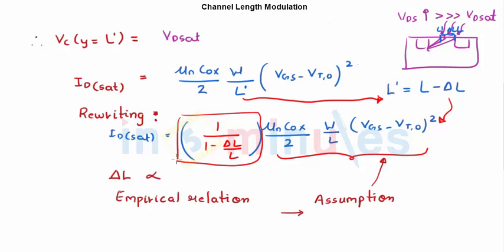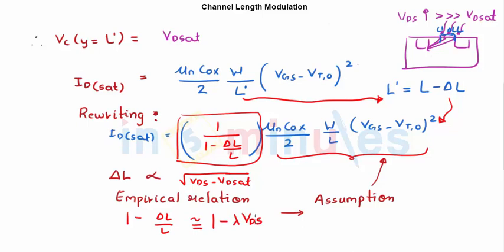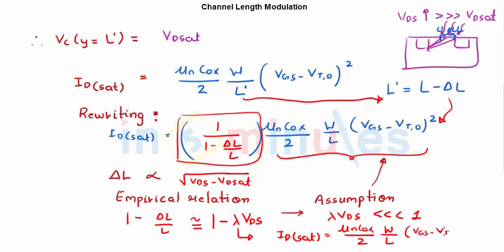It can be shown that the shortening of the channel ΔL is proportional to the square root of (VDS − VDSsat), though that proof is beyond the current scope. Using an empirical relation, (1 − ΔL/L) ≈ (1 − λ·VDS), where λ is the channel length modulation coefficient. Assuming λ·VDS is much less than 1, the saturation current simplifies to: IDsat = μN·COX/2 · (W/L) · (VGS − VT)² · (1 + λ·VDS).